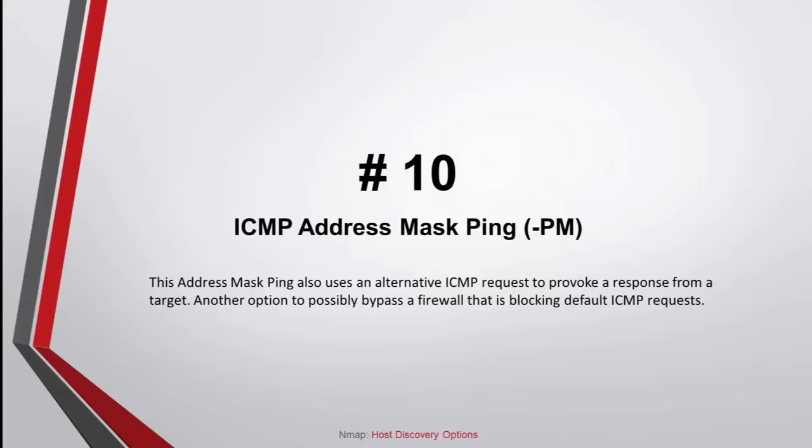Command number 10: ICMP address mask ping. This address mask ping also uses an alternative ICMP request to provoke a response from a target — another option to possibly bypass a firewall that is blocking default ICMP requests.